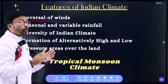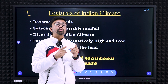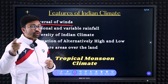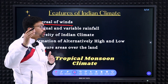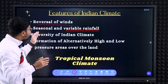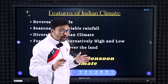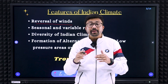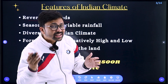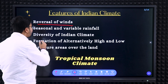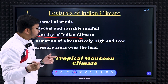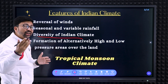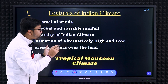The features of Indian climate include reversal of wind. In summer, wind blows from the southwest — that is called the southwest monsoon. In winter, it comes from the northeastern side — that is called the northeast monsoon. There is a complete change in wind direction, hence reversal of wind. Also, seasonal and variable rainfall — different parts of India get different amounts of rainfall at different times. Next, diversity in Indian climate — different parts experience different climatic conditions.